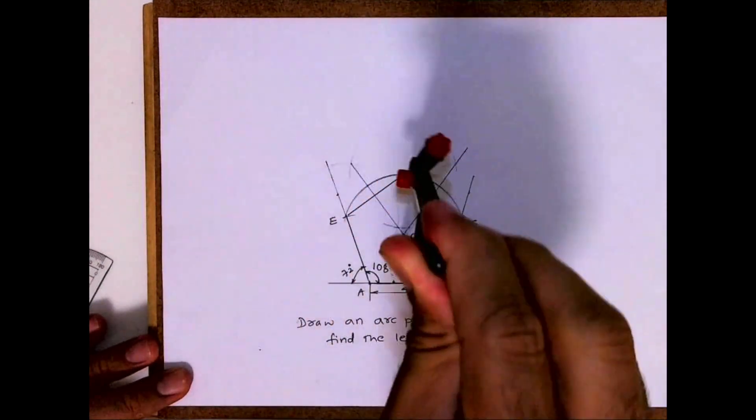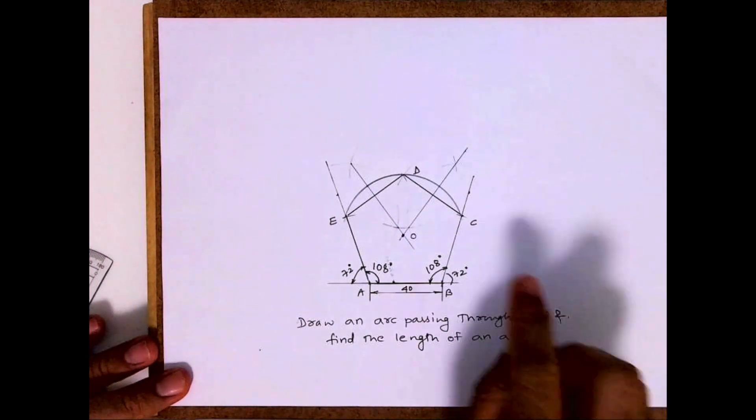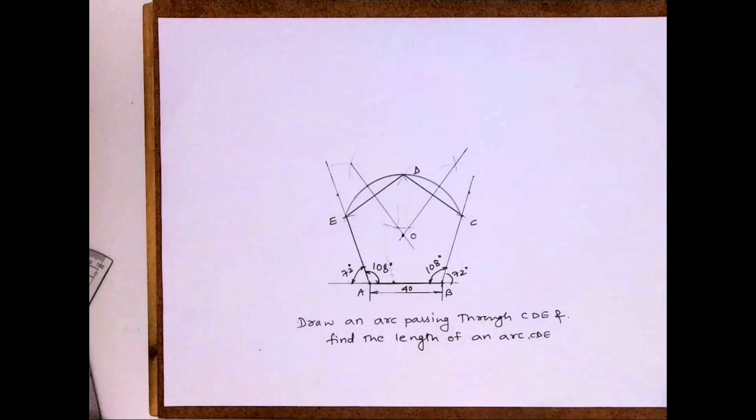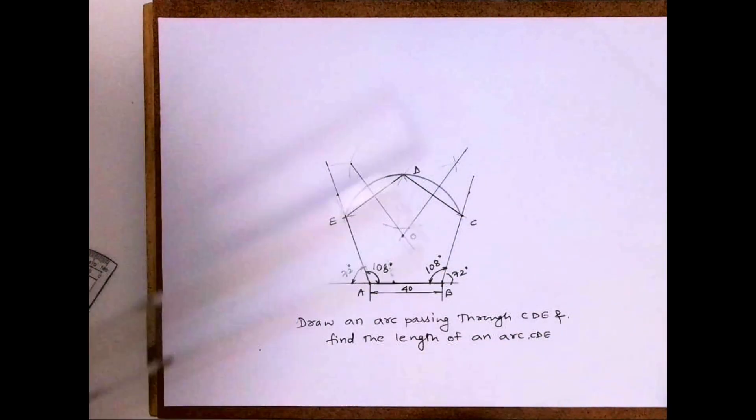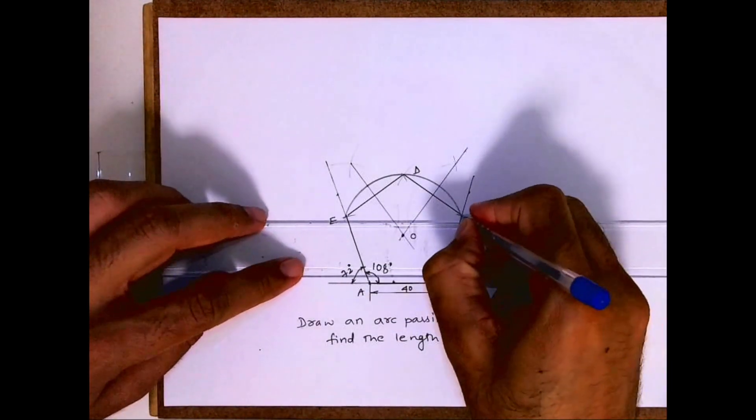So this is how we can draw a curve passing through CDE. Now I want to know the arc length CDE, so what I will do is join C to E.